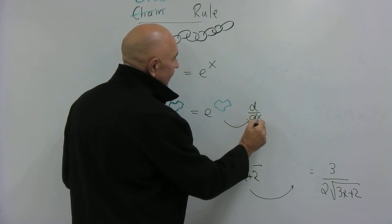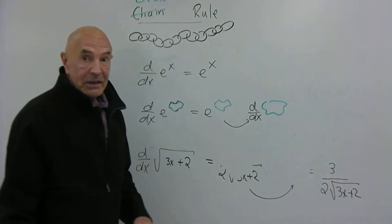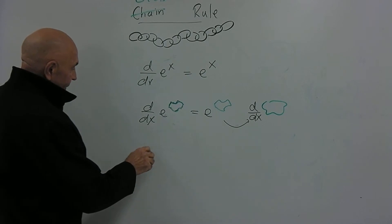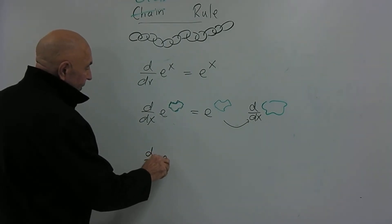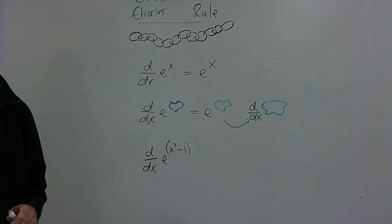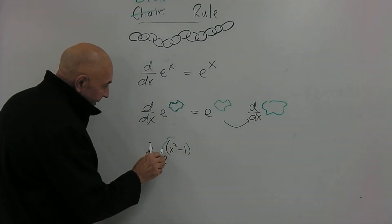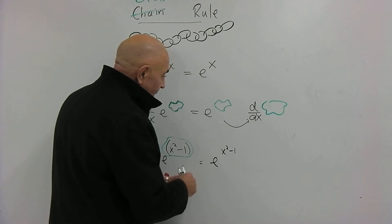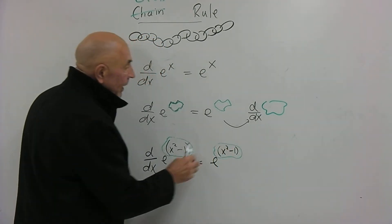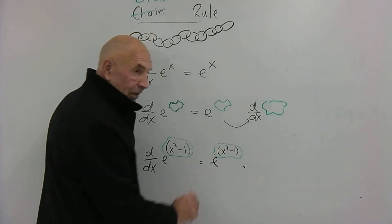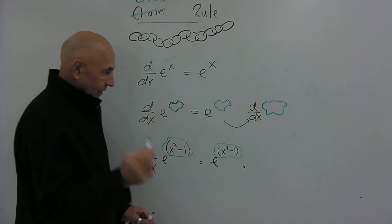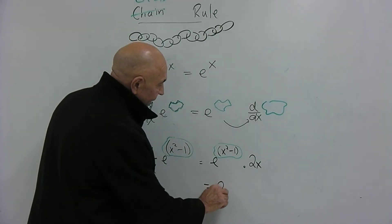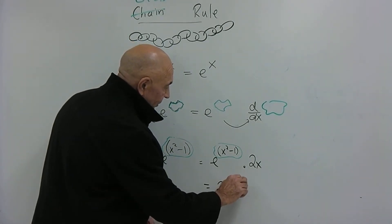For example: what's the derivative of e to the (x squared minus 1)? The glob is (x squared minus 1). The answer is e to the (x squared minus 1) — notice I haven't touched the glob yet — then multiply by the derivative of the glob, which is 2x. Usually you write the 2x in front, giving 2x times e to the (x squared minus 1).